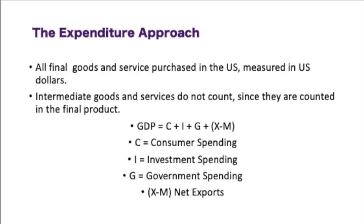What's not included in the expenditure approach are intermediate goods, since they are not counted in the final product. An intermediate good would be something like this: if you were to go and purchase a car, you're not going to get a bill for the tires, the windows, the stereo, the upholstery, and the seats. You get one bill for the entire car, because all those intermediate goods — the tires, the upholstery, the windows, the seats, and the stereo — are all included in the final good.